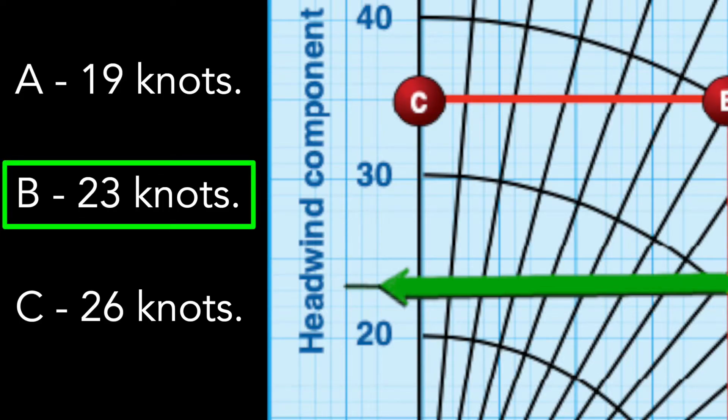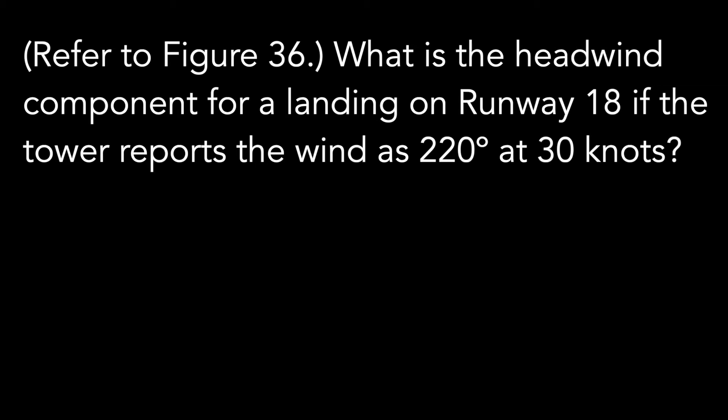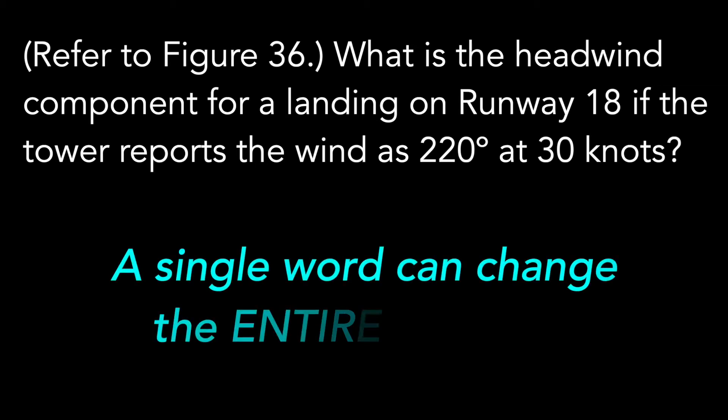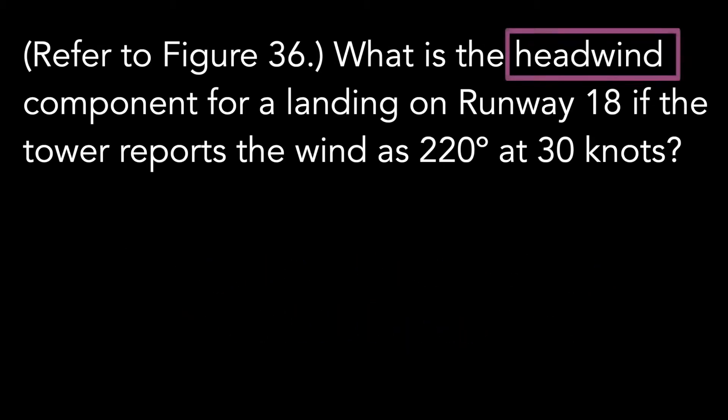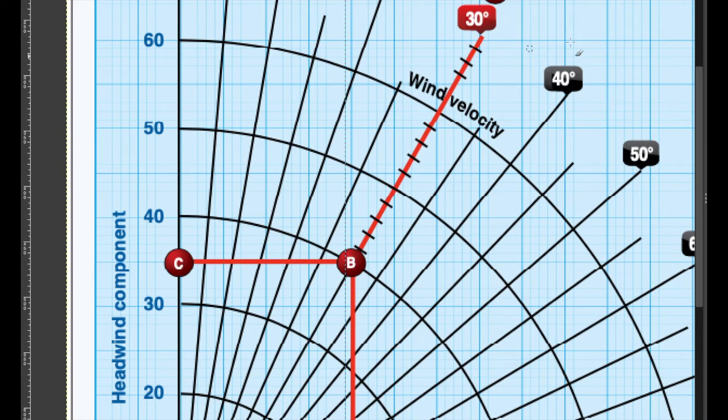This places us somewhere below 25, so within our given answer options for this question, option B would be our best answer. Stay careful with questions like these during your written test because with a single word change in the question the correct answer becomes totally different. We could exchange headwind with crosswind.